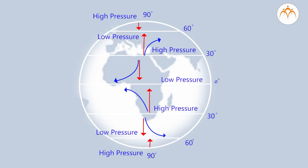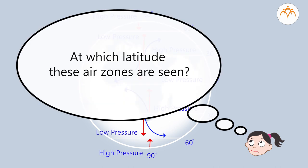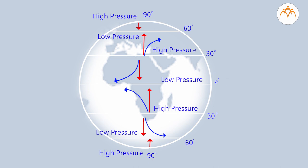Students, observe this diagram in which high and low pressure zones are seen. At which latitude are these air zones seen? We observe that at the equator the pressure is low, whereas in both hemispheres — north and south — at 30 degrees the pressure is high.